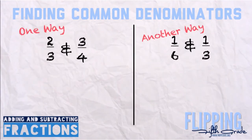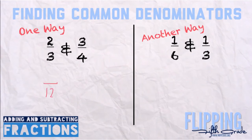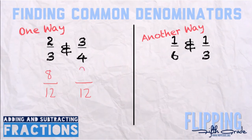Let's look at two ways of finding a common denominator. The first way: we have 2 thirds and 3 fourths. The easiest way is to multiply the denominators by each other — 3 times 4 gives you 12. However, whatever you do to the bottom you must do to the top. So multiply 2 thirds by 4 on top and bottom to get 8 twelfths. Multiply 3 fourths by 3 on top and bottom to get 9 twelfths. So 2 thirds and 8 twelfths are equivalent fractions, and 3 fourths and 9 twelfths are equivalent fractions.